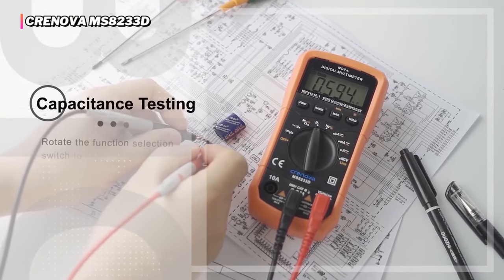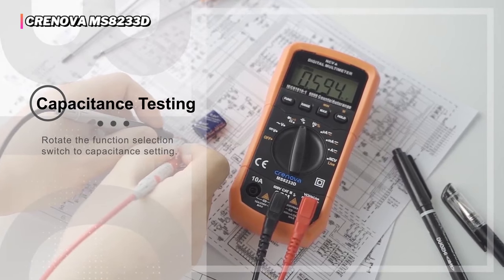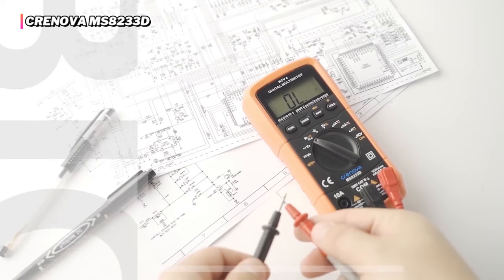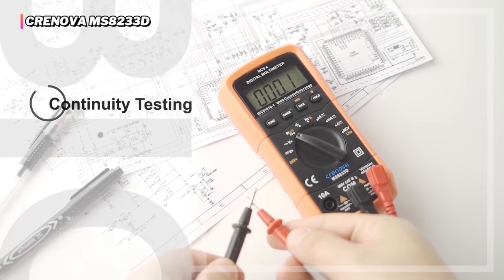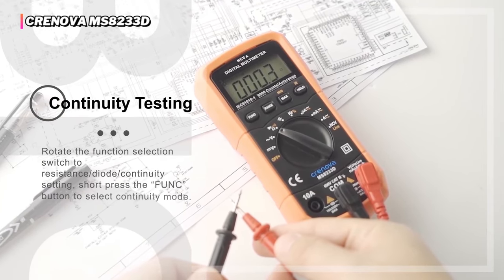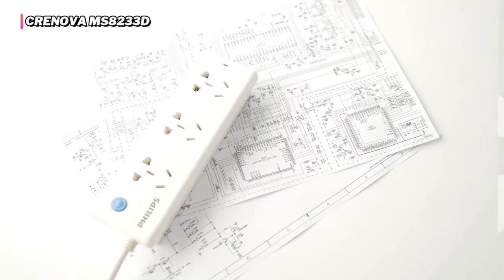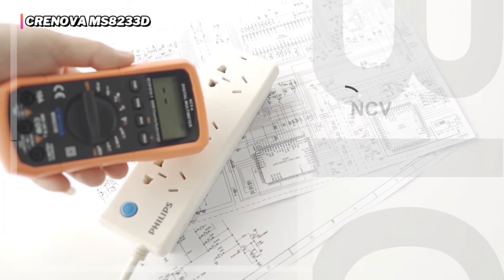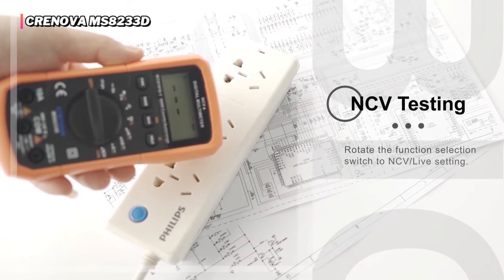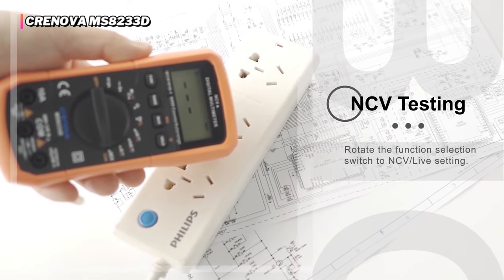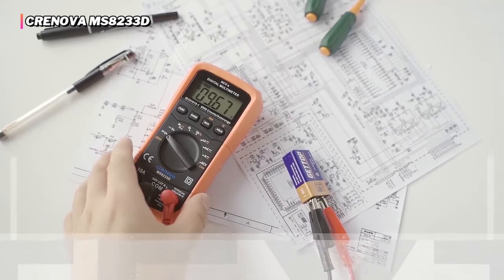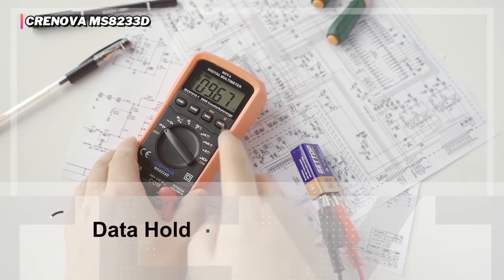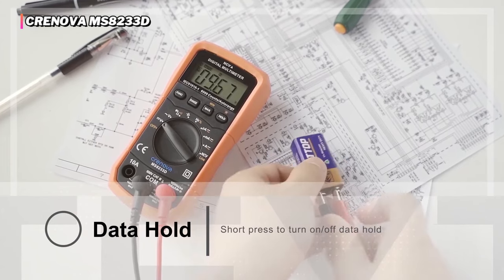It has a continuity check and a diode test, allowing the current to run in one direction. This device also includes handy features like a backlight, hold and max functions. This Cronova model comes with the typical point probes, a pair of alligator clip test leads, and a nice storage case to keep it protected in your tool bag. Built with beginners in mind.